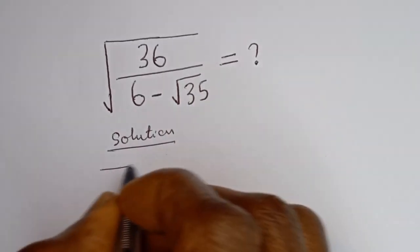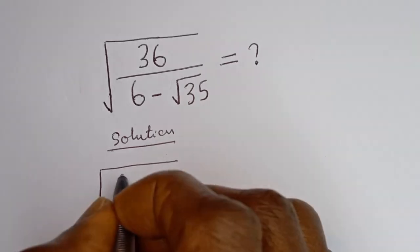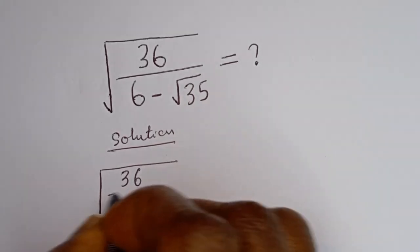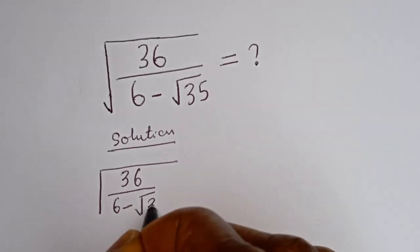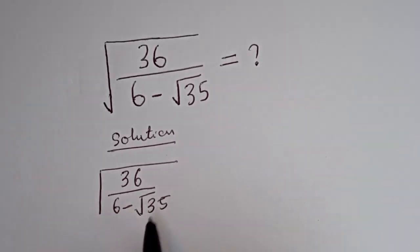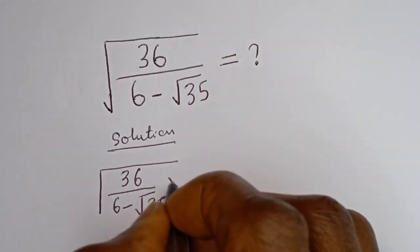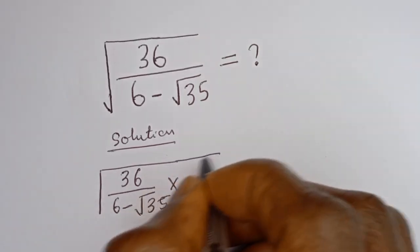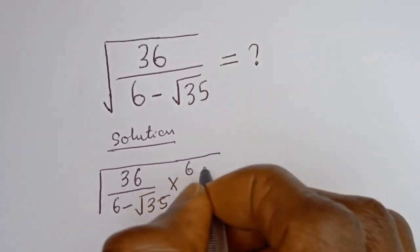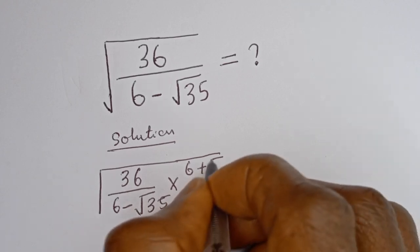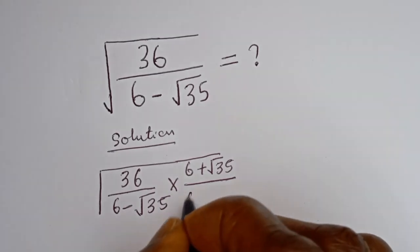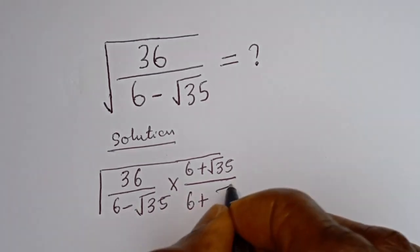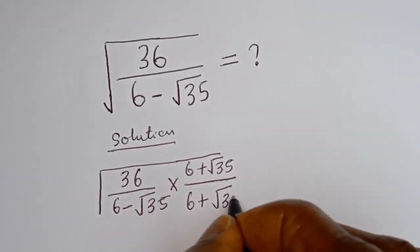We have square root of 36 divided by 6 minus square root of 35. Let's rationalize the denominator — that is, multiply by 6 plus square root of 35 divided by 6 plus square root of 35.